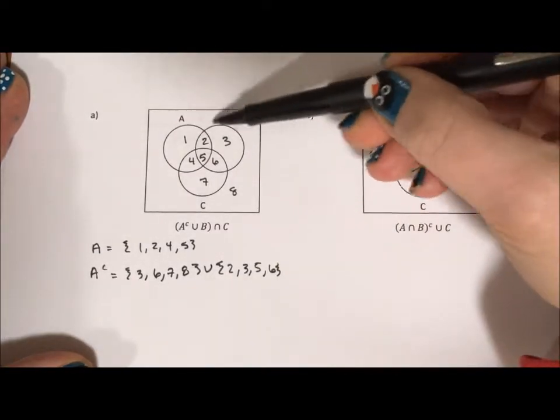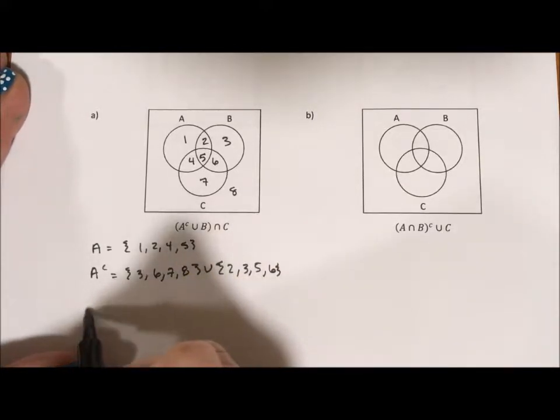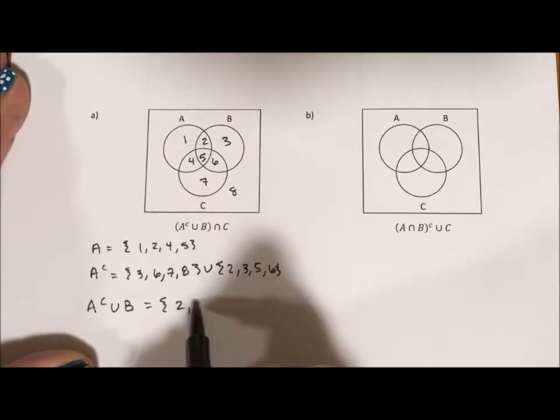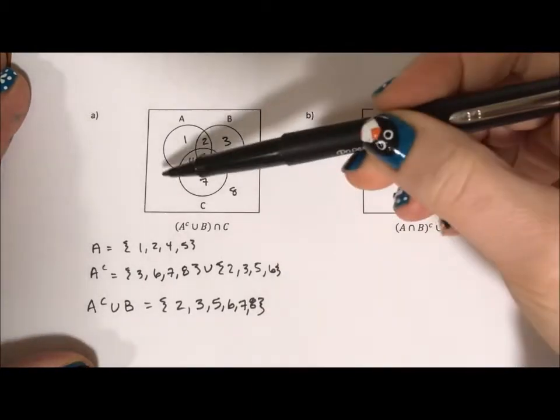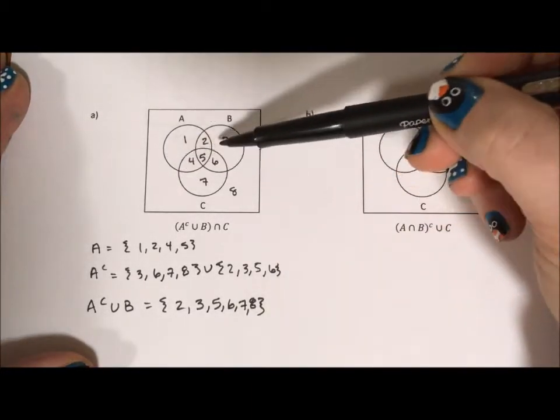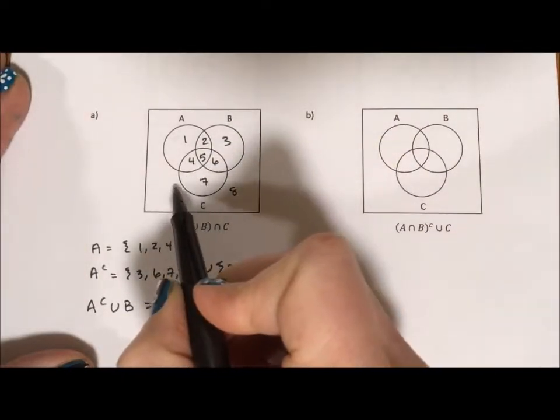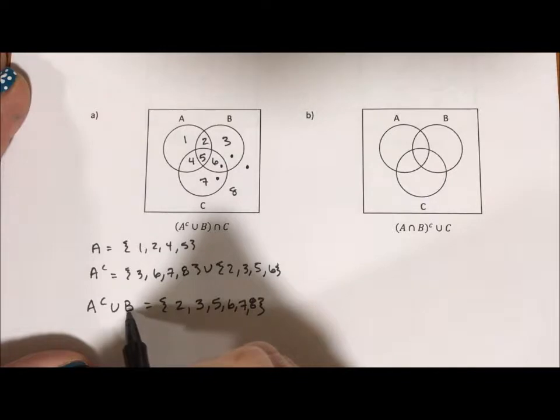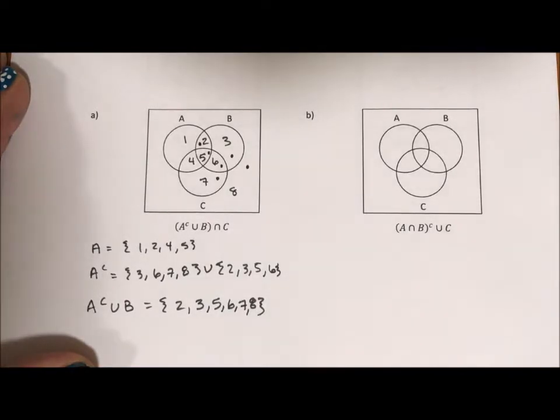And the union means putting it all together. So if I'm putting it all together, A complement union B is going to be 2, 3, 5, 6, 7, and 8. So everything that's outside of A, including these parts of B. So if we're doing it visually, we would be marking off this space, this space, this space, and this space as a complement of A. And then add in everything that's B would bring us these two. We have everything but 1 and 4 so far.